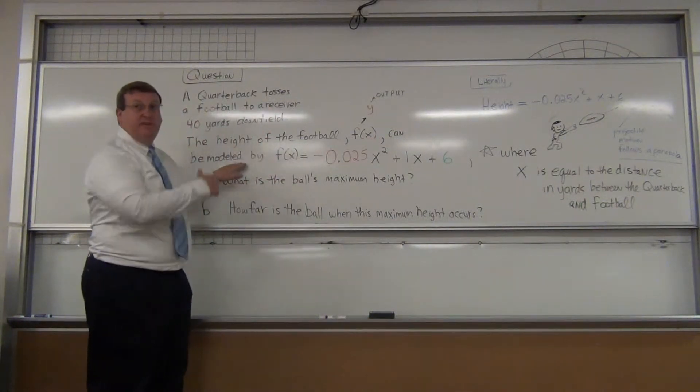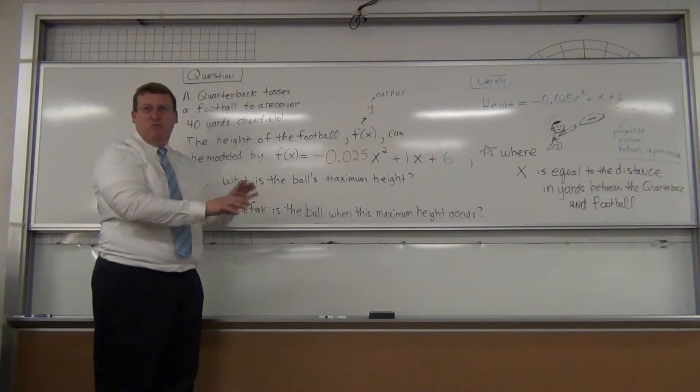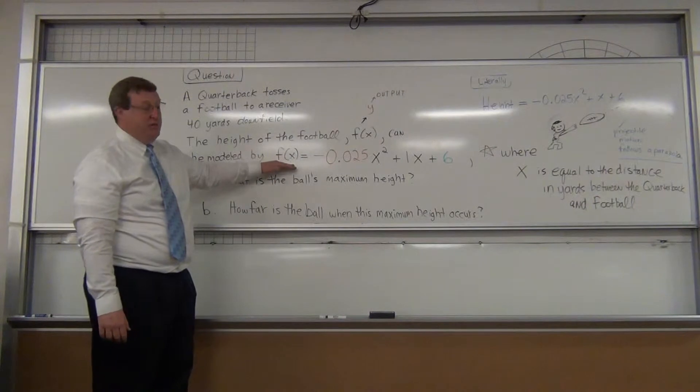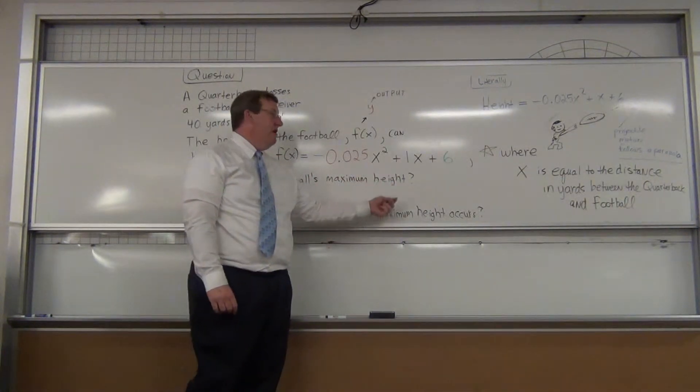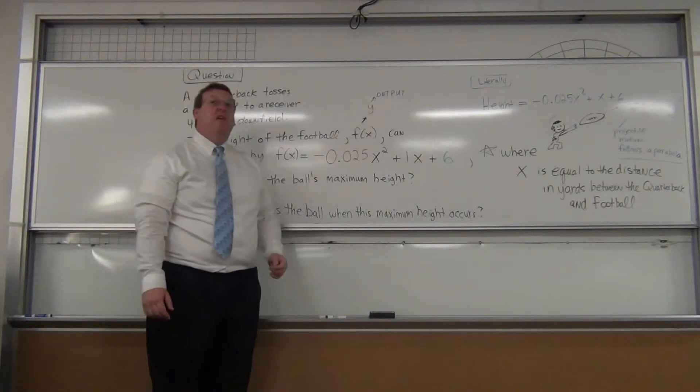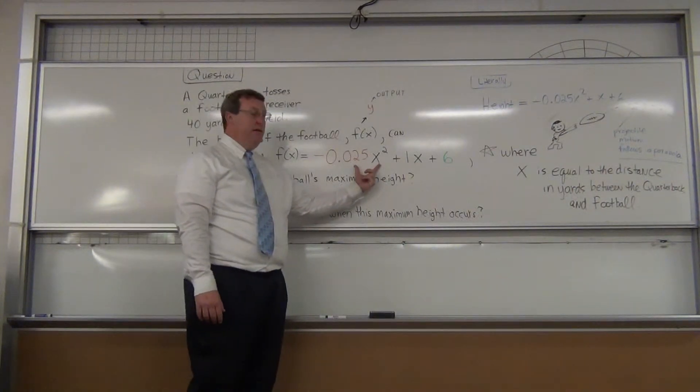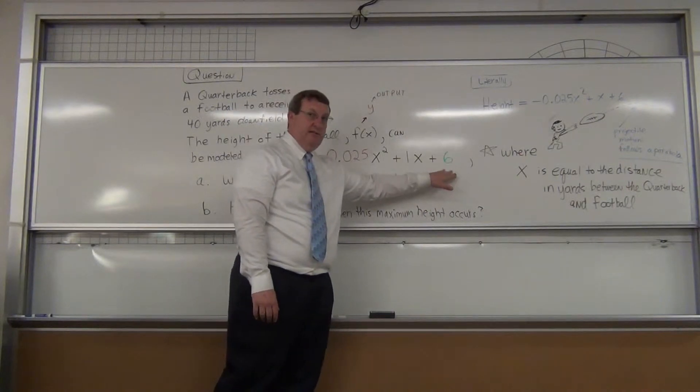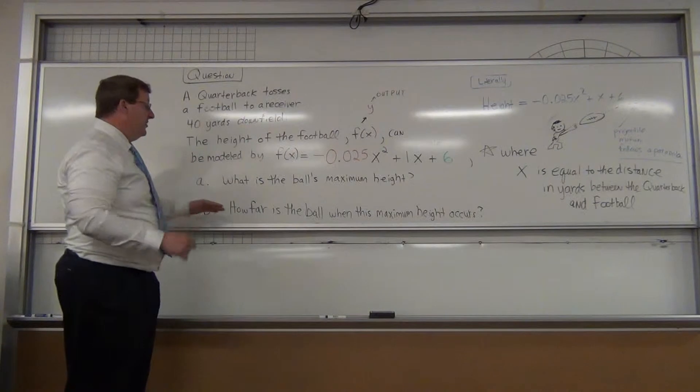It can be modeled by this function: negative 0.025x squared plus x plus 6. Some of you might notice Dr. B's color theory: sexy red here for the number in front of the x squared, bad boy blue in front of the number x, and money green C, C low green, so 6.